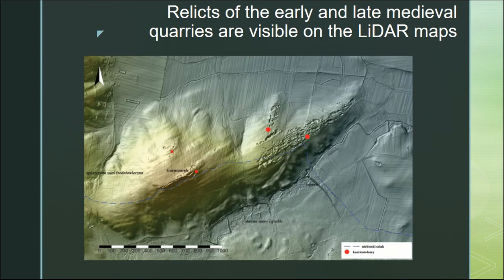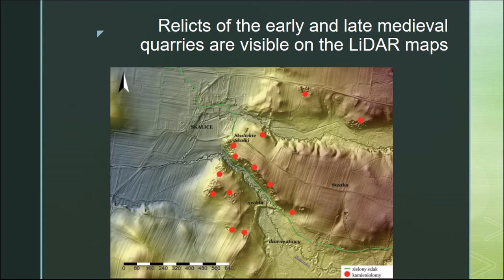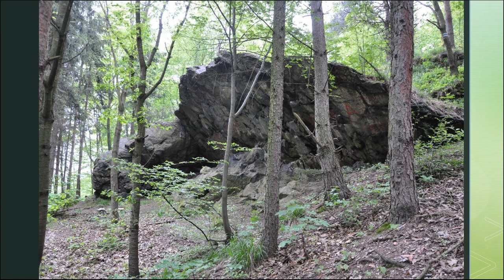Most relics of early medieval and medieval quarries show gatherings of small pit quarries. They are often no more than one square kilometer. The deeper ones represent late medieval exploitation, but the smaller ones represent early medieval exploitation. In some cases we also have gatherings of pit quarries as well as open escarpment quarries, which represents this kind of site.